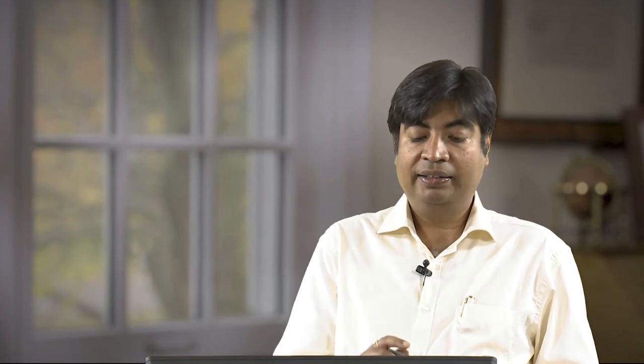Turn-off control is required, which is only possible with the GTO. A conventional thyristor could only turn off at current zero, not at the required instant when voltage is zero. Therefore, it is not always possible to replace the GTO with a thyristor. When a conventional thyristor valve turns off at zero current, it produces a full DC offset voltage on the capacitor, doubling the capacitor voltage across the thyristor. This increases stress on the valve and the time delay before the capacitor is again bypassed.